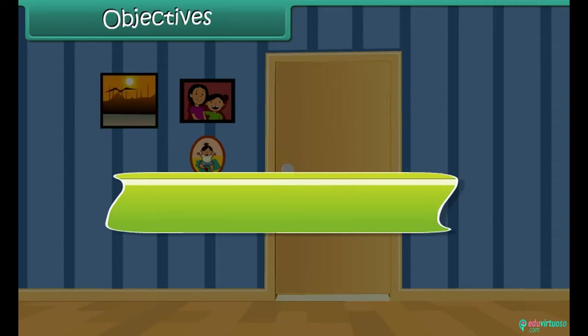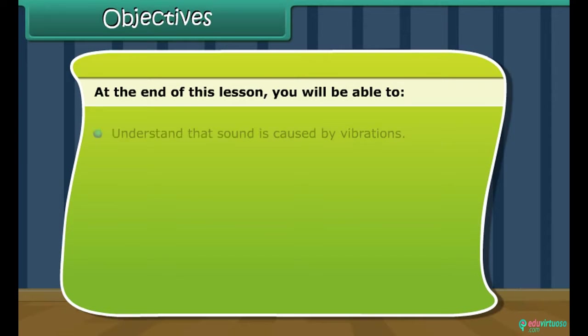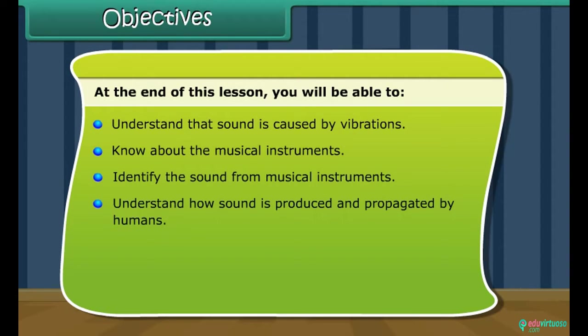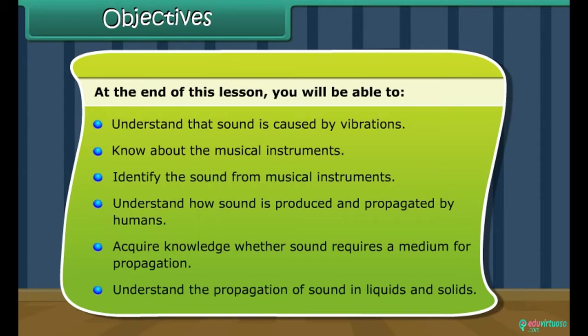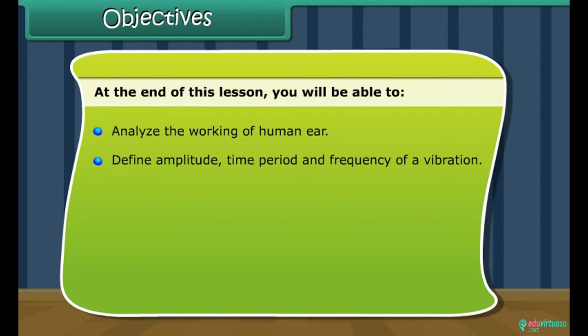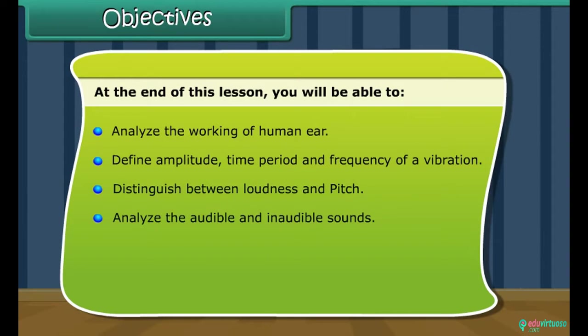Objectives. At the end of this lesson, you will be able to understand that sound is caused by vibrations, know about musical instruments, identify the sound from musical instruments, understand how sound is produced and propagated by humans, acquire knowledge where the sound requires a medium for propagation, understand the propagation of sound in liquids and solids, analyze the working of human ear, define amplitude, time period and frequency of a vibration, distinguish between loudness and pitch, analyze the audible and inaudible sounds, differentiate between noise and music, understand about the noise pollution and its control measure.